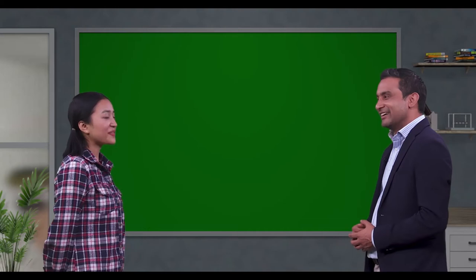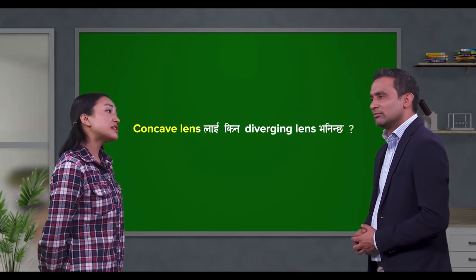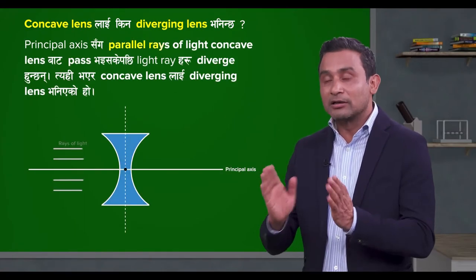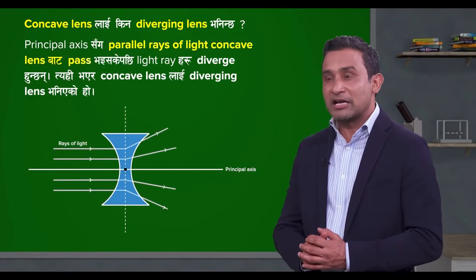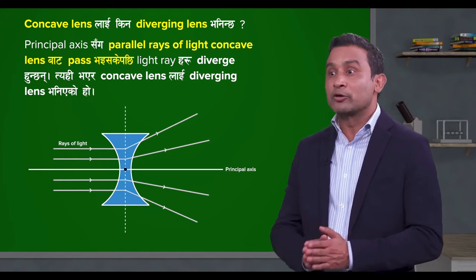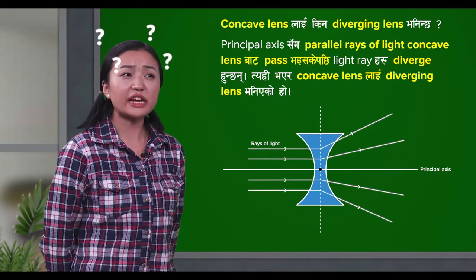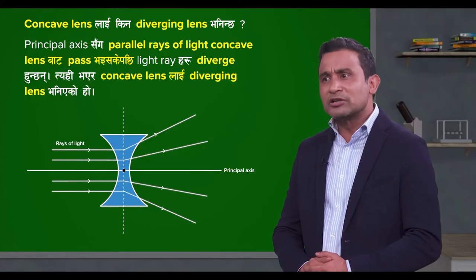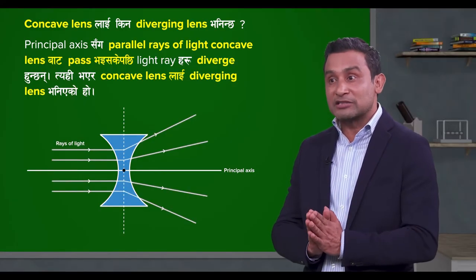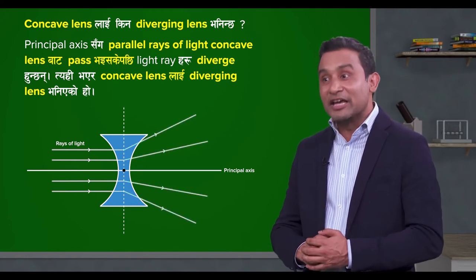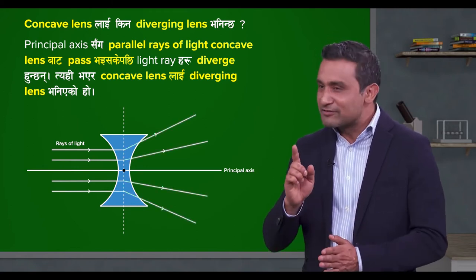Okay. And, teacher, why is concave lens called diverging lens? I'll explain. With the principal axis, parallel rays of light pass through the concave lens. The light rays then diverge. The light rays diverge, so when they pass through the concave lens, these rays spread out. That's why concave lens is called diverging lens.